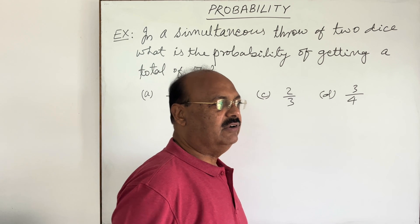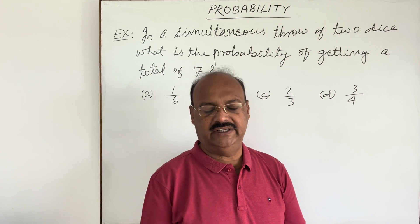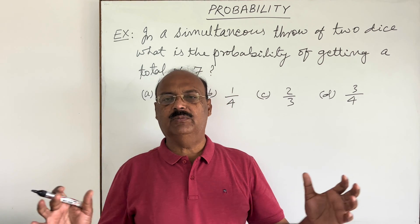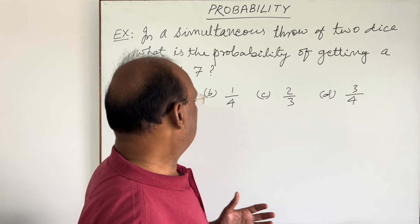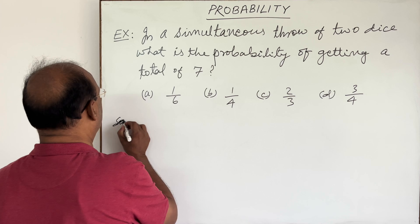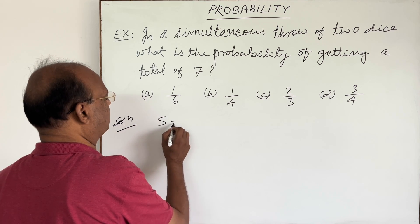Whenever two dice are thrown simultaneously, the total number of outcomes will be 36. How? These outcomes are denoted by sample space S.